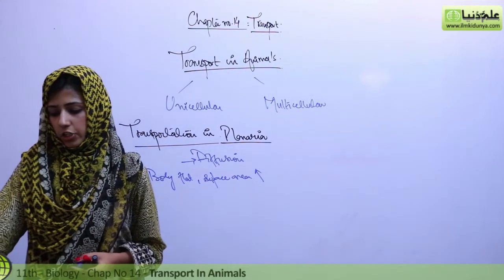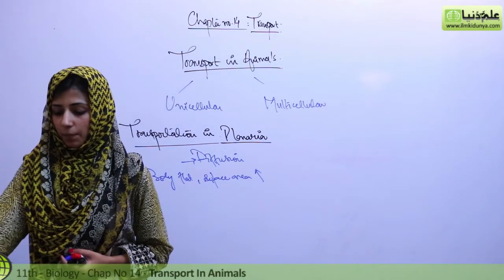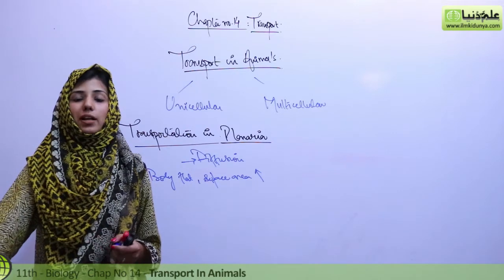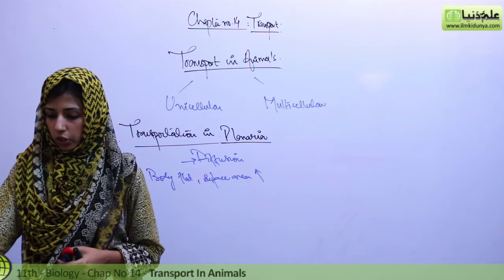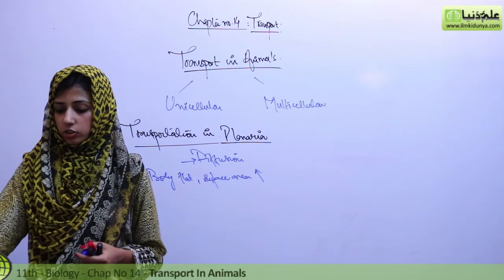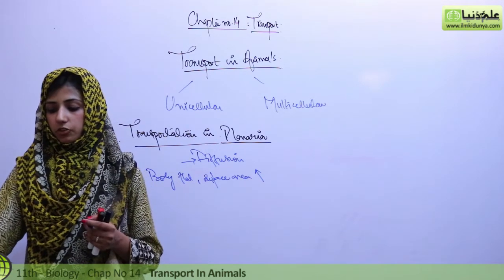And exchange of materials is easily facilitated. The second is planaria is acoelomate, acoelomate-like body, there is no cavity. And for removal of the waste the same route is reversed, oxygen diffuses into the ectoderm.